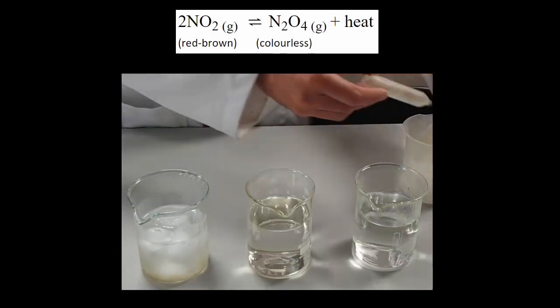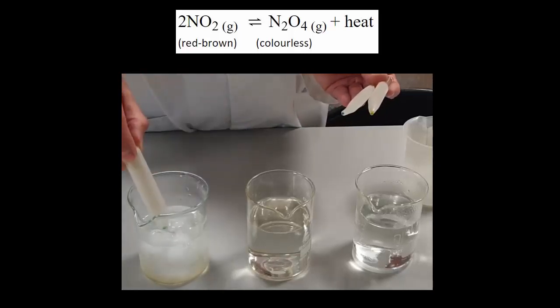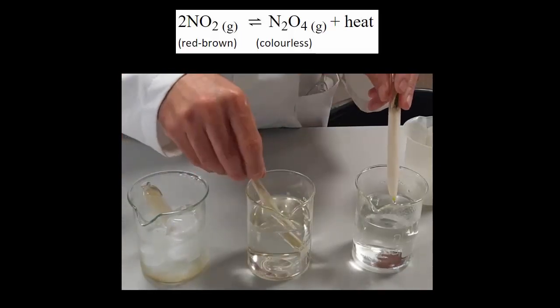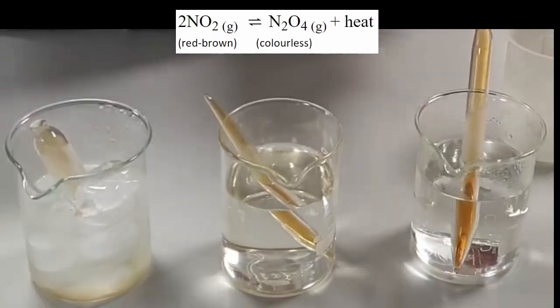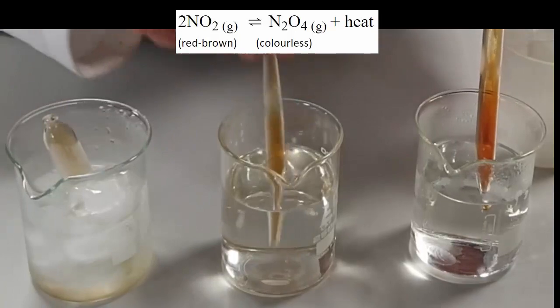So this is a reaction of a gas, nitrogen dioxide, that is a reddish color and dinitrogen tetraoxide that it's in equilibrium with. But it is an exothermic reaction going in this direction.